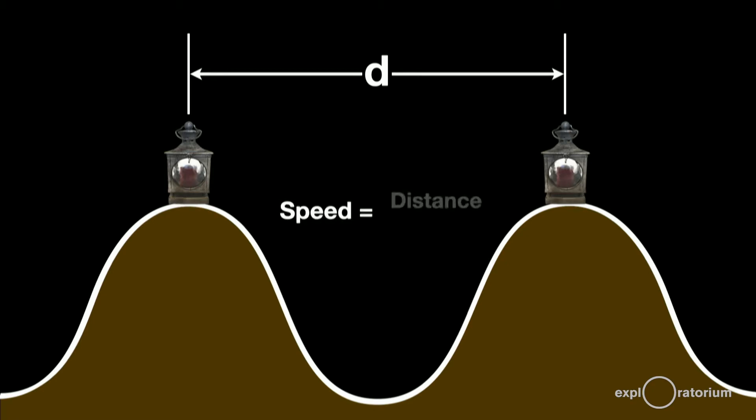Using his pulse for timing—there were no clocks yet—Galileo planned to measure the time the light took to travel back and forth between the two hills. If he knew the time and the distance, he could figure out the speed of light.